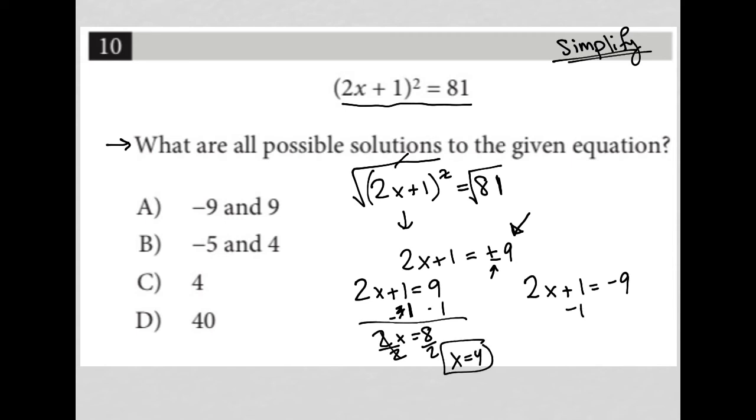And then here, subtract 1. I have 2x equals negative 10, divide by 2, and I'm left with x equals negative 5.